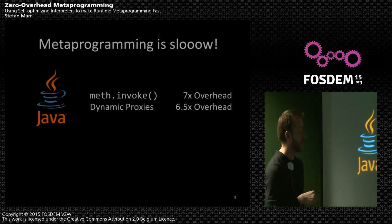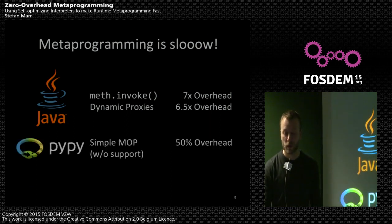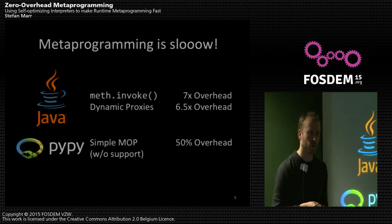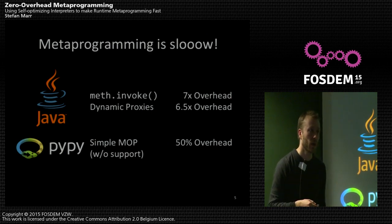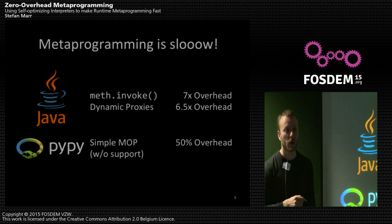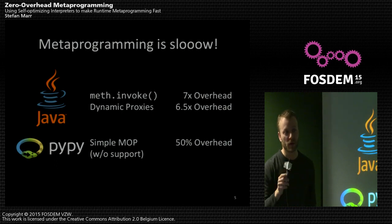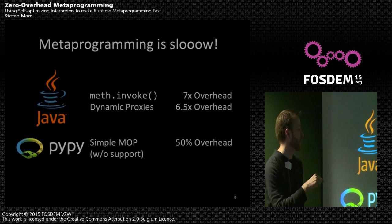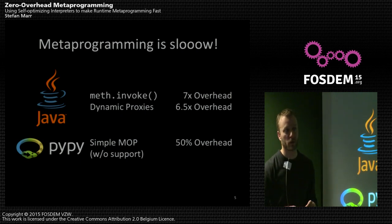Generic metaprogramming is pretty slow on Java. Compared to that, on PyPy they have a metatracing just-in-time compiler, which is actually pretty fast. But if you start to implement such a simple meta-object protocol as I showed, you still get about a 50% overhead, because the compiler — even though it can optimize all those little things — still doesn't have enough information to optimize the actor meta-object protocol example.